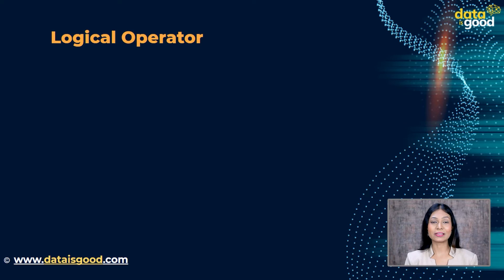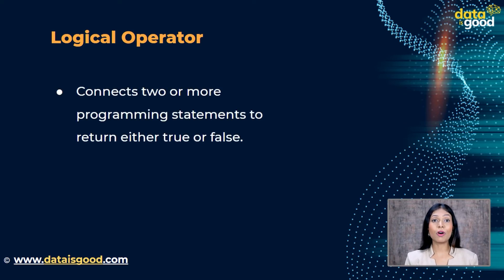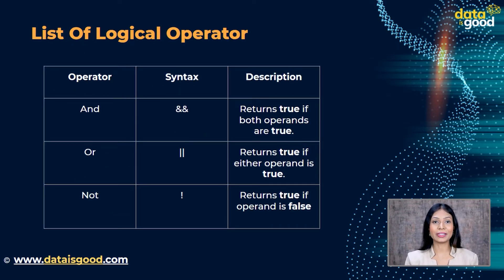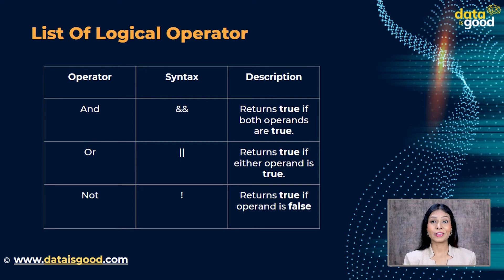Logical operators connect two or more programming statements to return either true or false. These operators are mostly used with boolean type but can be applied to any data type. There are three types of logical operators summarized in the table on your screen: AND returns true if both operands are true, OR returns true if either operand is true, and NOT returns true if the operand is false.